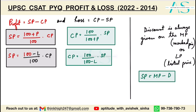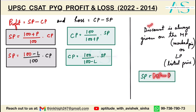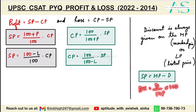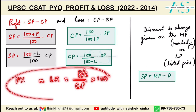Discount is never given on the cost price. Discount is always given on the marked price or listed price — the value above cost price that you mark up. Selling price in case of discount equals marked price minus the discount amount. Discount percent equals discount divided by marked price, multiplied by 100. Profit or loss percent is always calculated on the cost price.